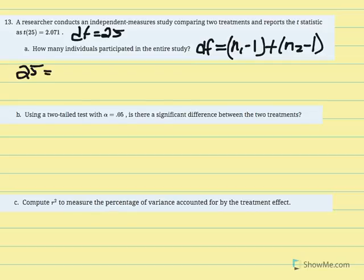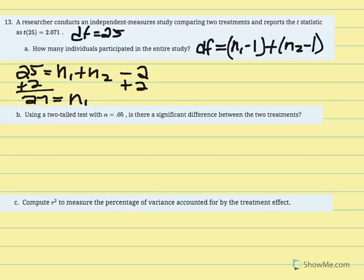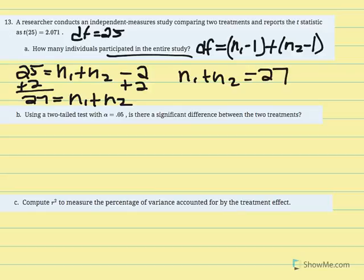For an independent measures t-test, degrees of freedom equals N1 minus 1 plus N2 minus 1, which simplifies to N1 plus N2 minus 2. With df equal to 25: 25 equals N1 plus N2 minus 2, so N1 plus N2 equals 27. We don't need each individual sample size — just the total across both samples, which is 27. What's in parentheses when a final statistic is reported indicates degrees of freedom for the test performed.